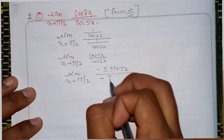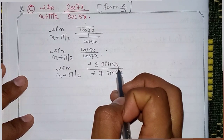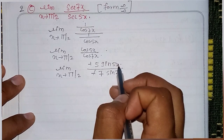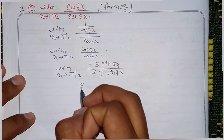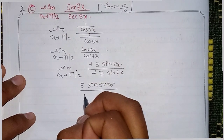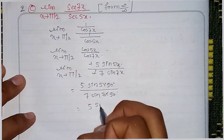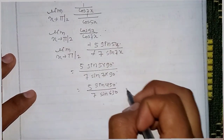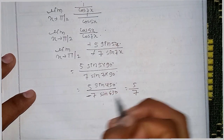Applying derivative: minus 5 sin 5x divided by minus 7 sin 7x. So minus and minus cancel. At x = 5π/2 — which is 90 degrees — sin of 5 into pi/2 gives sin 90, which is 1. And sin of 7 into pi/2 gives sin 630 degrees — which is also a known value. So 5 divided by 7 — with the negatives: the answer is minus 5 by 7.